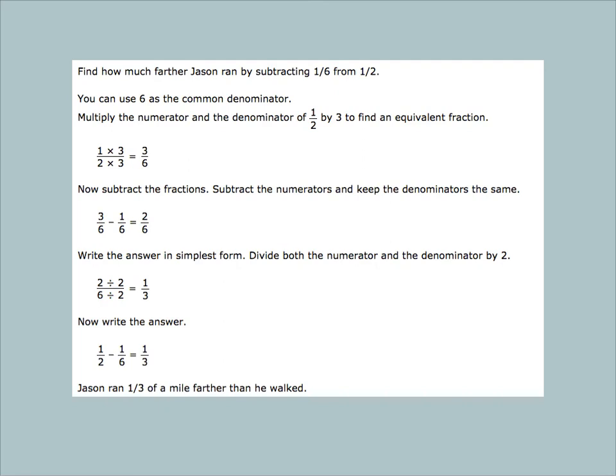Hopefully you paused the video. We're going to go over what you did in that last part. To find how much farther Jason ran, you had to subtract 1/2 minus 1/6. If you were looking at it, you knew that 2 was a factor of 6 and that you can multiply by 3 in order to find equivalent fraction. 1/2, you could multiply by 3 on the top and the bottom to get the new fraction of 3/6. Then when you put those together, you can subtract them. 3/6 minus 1/6 would give you 2/6. And if you figured it out that you had to simplify, go you. You had to divide both the top and the bottom by 2 in order to give you the simplified answer of 1/3. Jason ran 1/3 of a mile farther than when he walked.